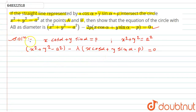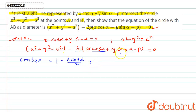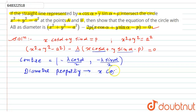From here, if we write the center of the circle, the center is at coordinates: x-coordinate equals minus lambda cos alpha divided by 2, and y-coordinate equals minus lambda sine alpha divided by 2. Now, according to the diameter property, x cos alpha plus y sine alpha minus p should equal 0, as this is the equation of the diameter, so this center should satisfy this equation. We will put these values in place of x and y.